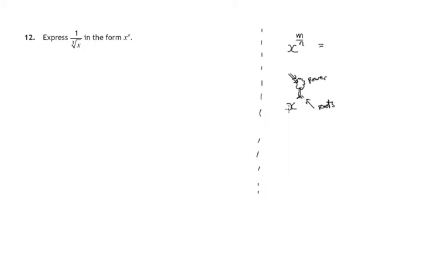So x to the power 3 over something — that's x cubed, x to the power 3. Powers at the top, roots at the bottom. So in this case it's the nth root of x raised to the power m.